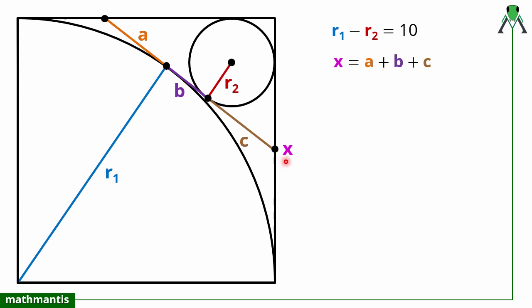We will use the property that lengths of tangents from an external point are equal. Starting from this point, I have drawn a tangent to this arc of a circle, and the same tangent drawn from here to here — so these two lengths will be equal. This length will also be equal to a, and this is also equal to a.